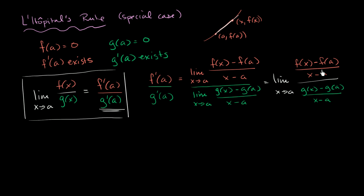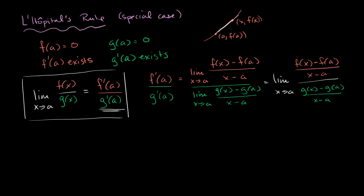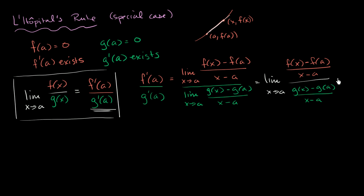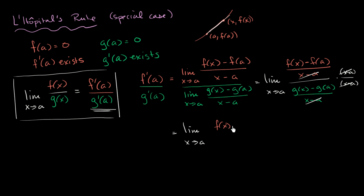To simplify, we multiply both the numerator and the denominator by x minus a, using the factor (x minus a) over (x minus a). The (x minus a) terms cancel out in both the numerator and denominator, leaving us with the limit as x approaches a of f(x) minus f(a) in the numerator, over g(x) minus g(a) in the denominator.